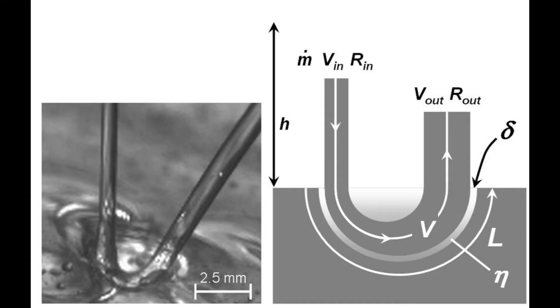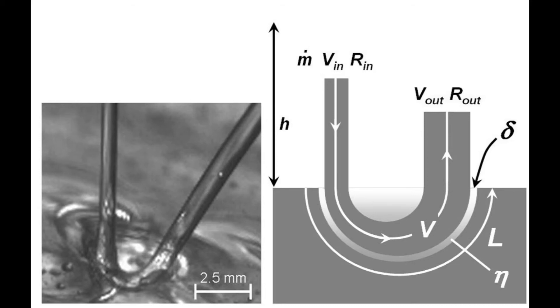While the incoming jet hits the heap, it also exerts a vertical force on the heap. This force will deform the less viscous layer into a dimple. Due to this dimple, the angle of the outgoing jet increases.